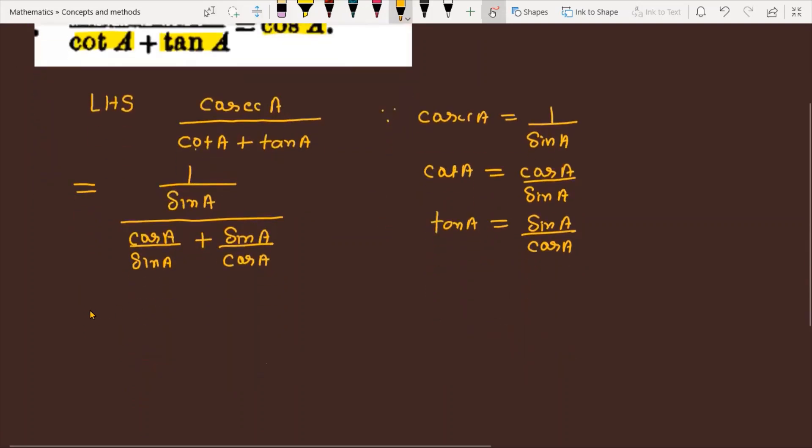If I open it, I will write in the numerator simply 1 upon sin A. And in the denominator, we will take the LCM, which is sin A into cos A. In the numerator we'll have cos A plus sin A.